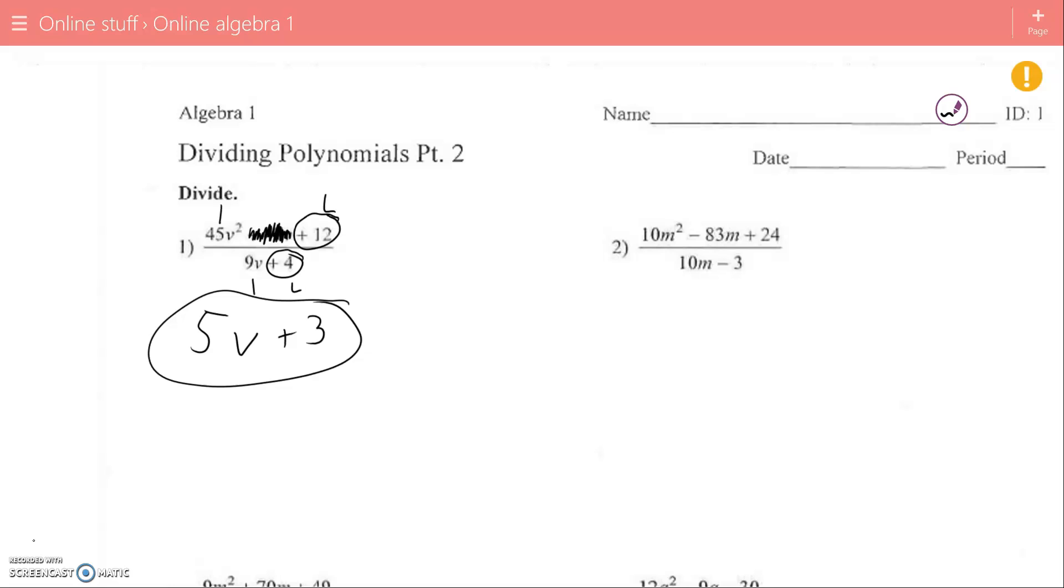As one more example, because you need to make sure you're careful with your signs, I'm going to do number 2, where I scratch out the middle term first. And then I divide my first by my first. 10 divided by 10 gives me 1. m squared divided by m gives me m, m to the first, or just simply m. And then I have positive 24 divided by negative 3. Positive divided by negative is a negative. 24 divided by 3 is 8. So 1m minus 8 is my answer.